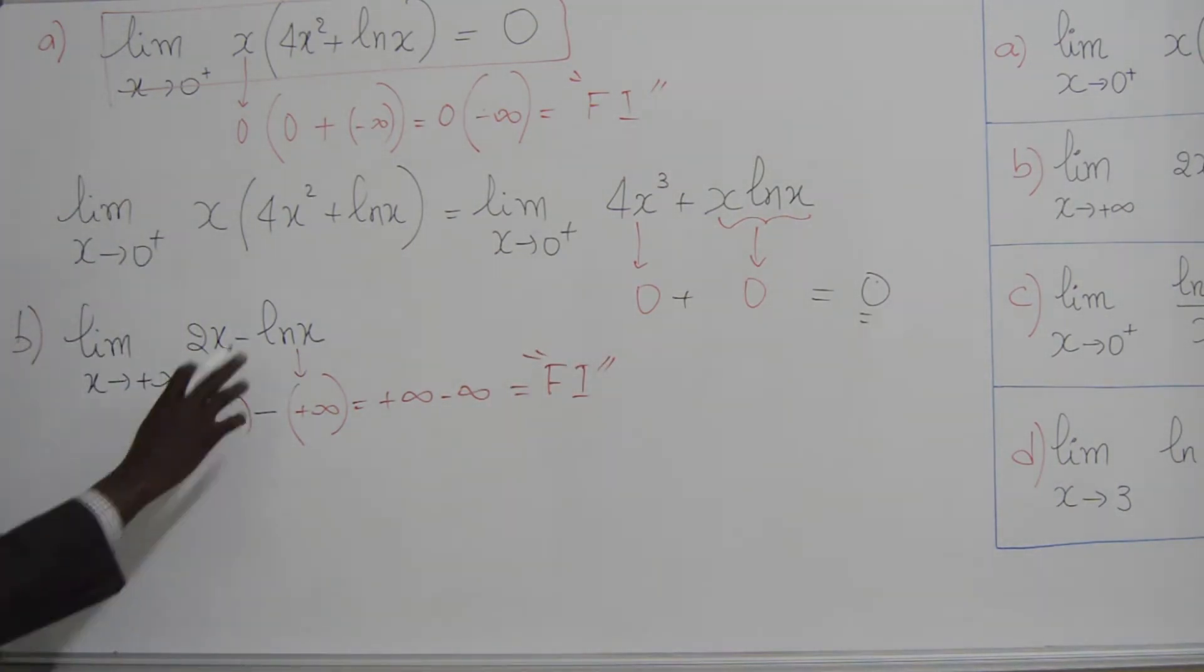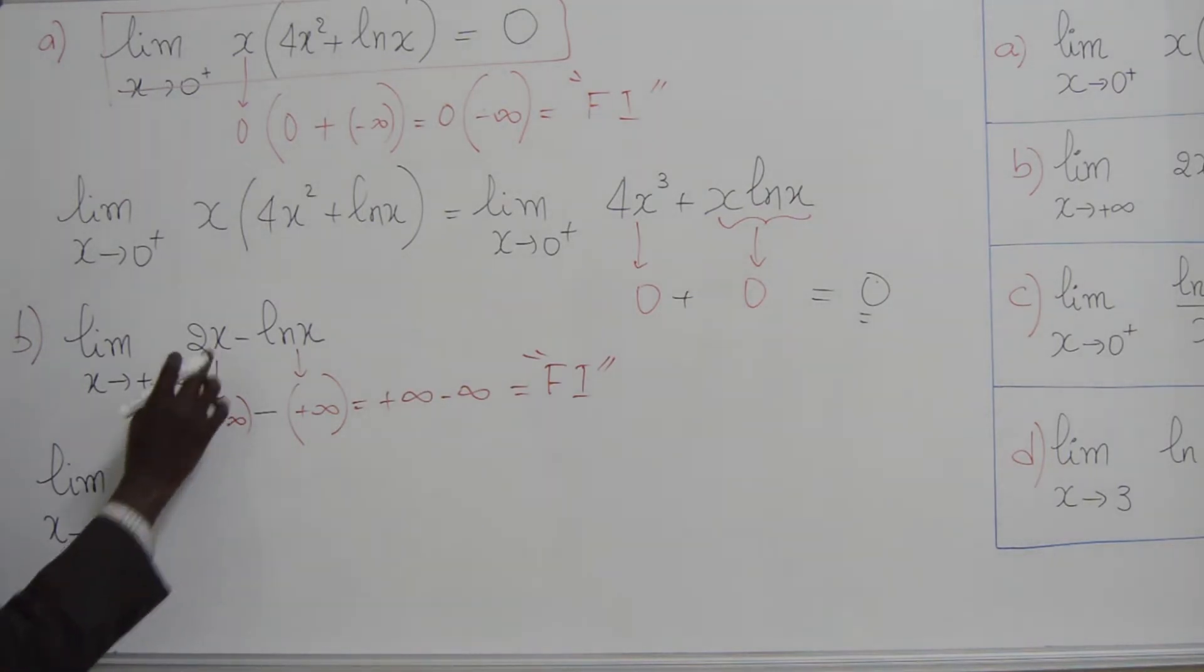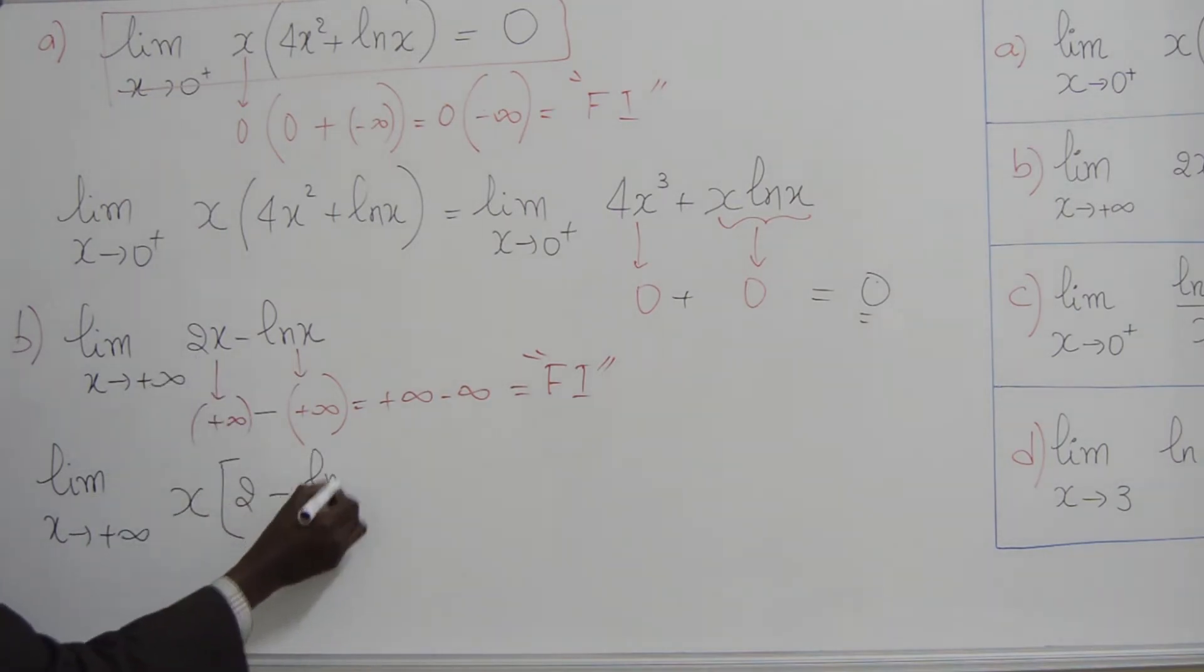Alors, il va falloir lever cette indétermination. Allons-y. On met la limite, lorsque x tend vers plus l'infini. Alors, une astuce simple, il suffit de mettre le x en facteur. Ce qui donne 2x moins ln2x avec x mis en facteur.